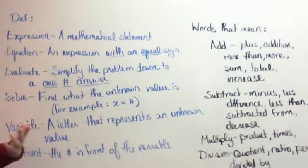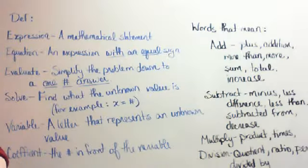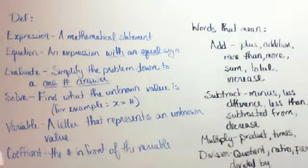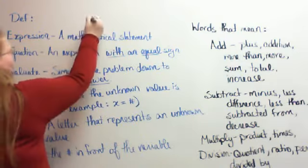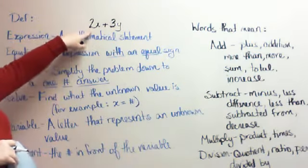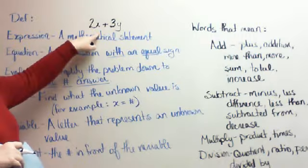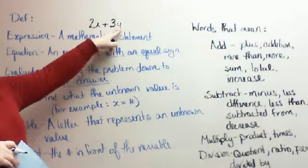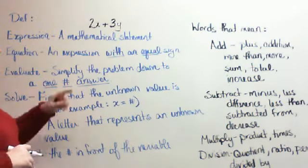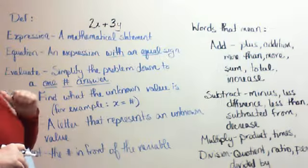A variable is a letter that represents an unknown value. It can be any letter — it could be x, could be y, could be a. They won't usually use i because i means something else in math. X and y are used tons. A coefficient is any number that's in front of the variable. So if my mathematical statement was 2x plus 3y, 2 is my coefficient to x, which is a variable, and 3 is my coefficient to y. You can have both coefficients and variables in the same expression — that's a mathematical expression, not an equation, because there is no equal sign.